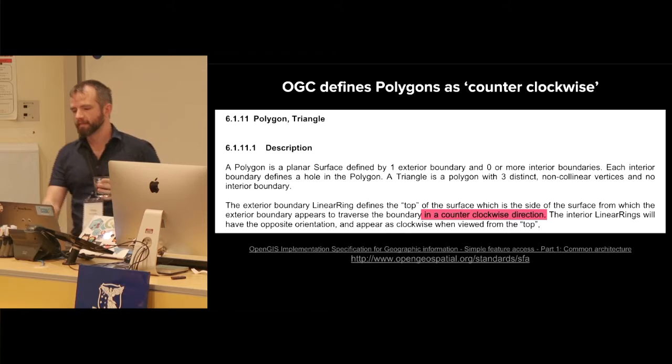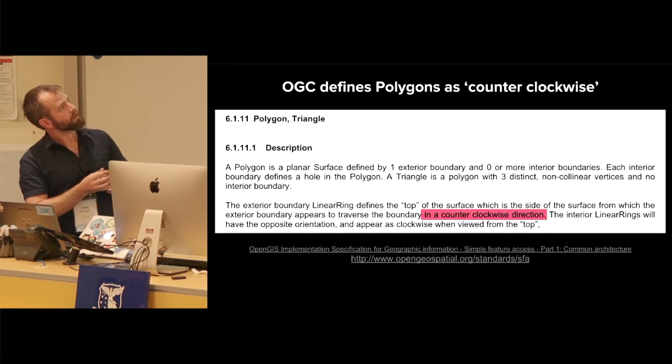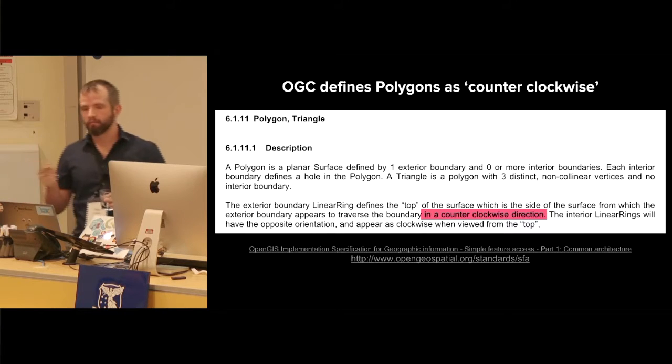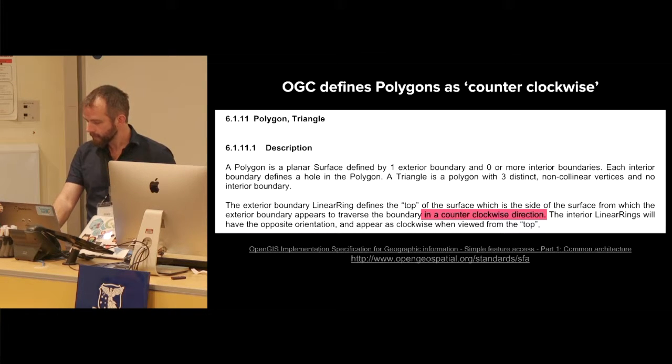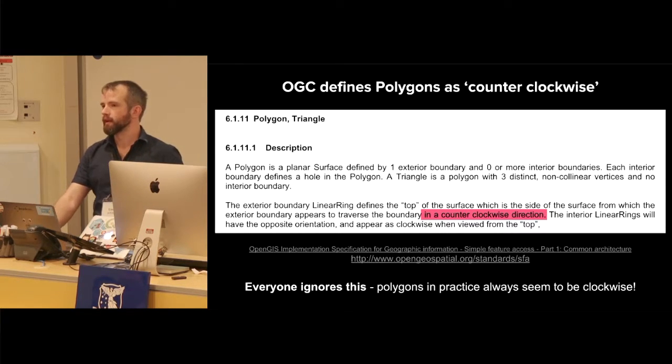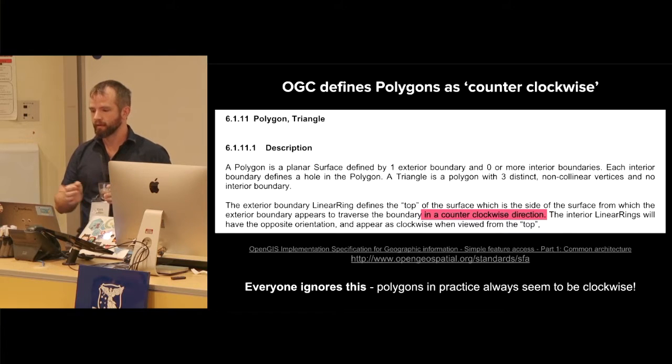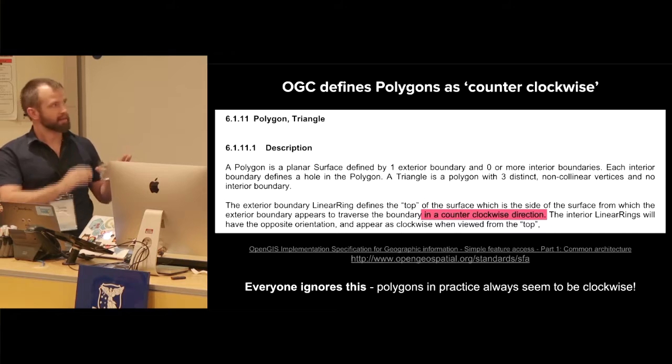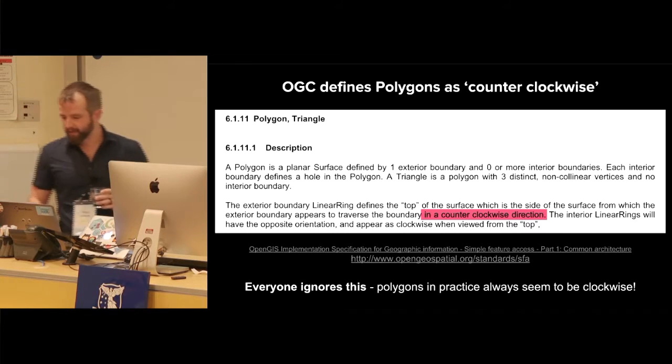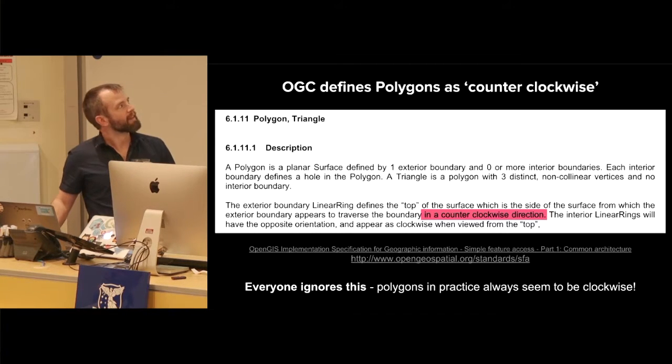The OpenGeospatial Consortium defines polygons as anti-clockwise. So apparently polygons should always be anti-clockwise. If there's holes, then they can be clockwise. But the exterior ring should always be anti-clockwise. It's good to have standards so we know how things behave. In this case, we agreed to completely ignore that standard. Pretty much everything I've seen has got a clockwise exterior ring. That's just how it is.